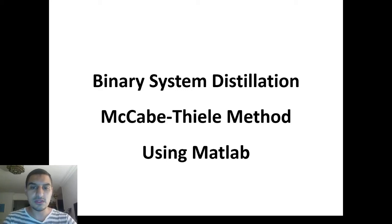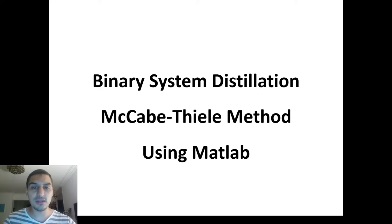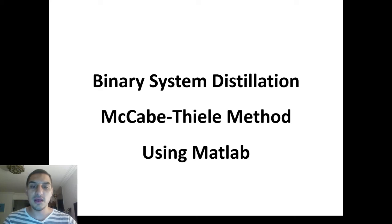Hello everybody. In this video we're going to do something we did before in the Microsoft Excel series, which is drawing the McCabe-Thiele diagram to calculate the number of stages for binary distillation. This is a shortcut method used to give an estimate of the number of stages before going to the detailed tray-to-tray calculations. I'm not going to go through the details since I've already covered them in the Excel series.